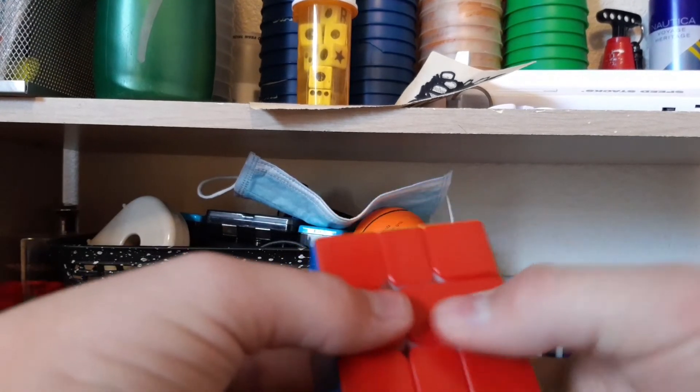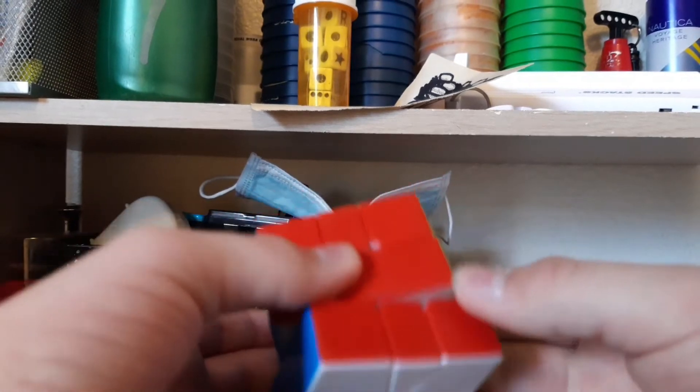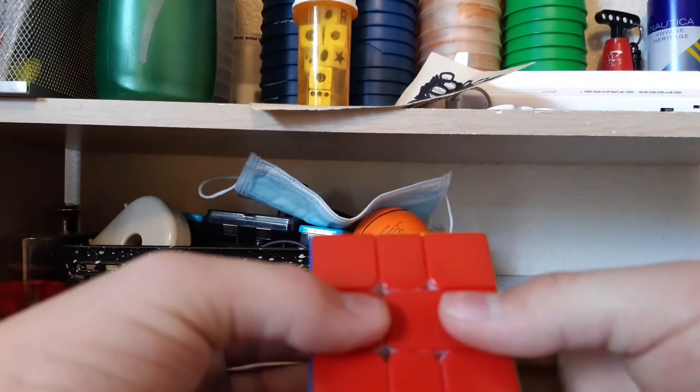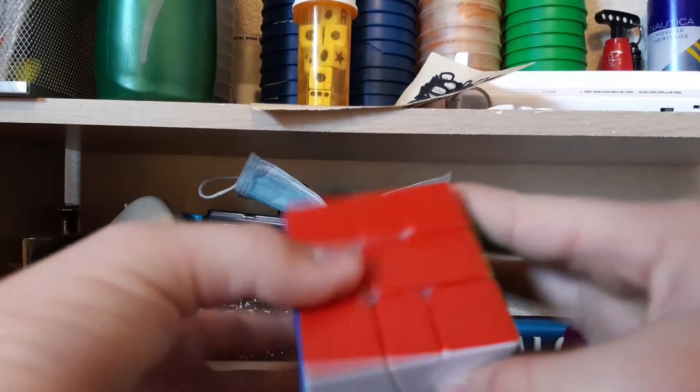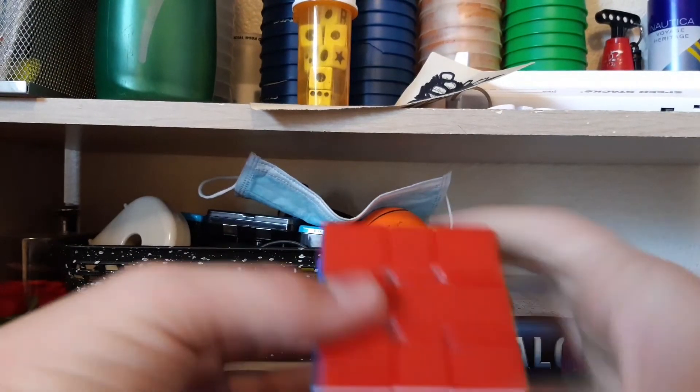For Square-1 I average about low, like around what I do with OH, but I do get a lot of sub-20 singles. They're not really rare for me anymore. I average about sub-21 to maybe sub-20 somewhere around there. Hopefully I can get past the sub-20 mark very soon. But yeah, that's basically it for Square-1.